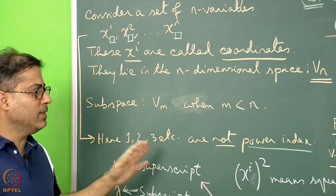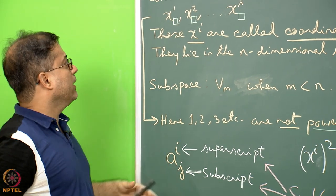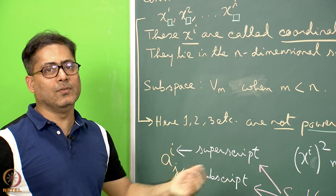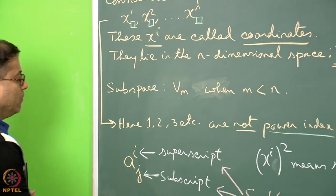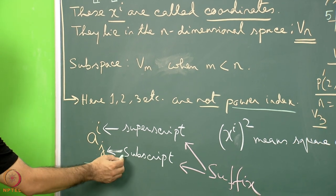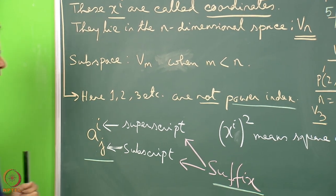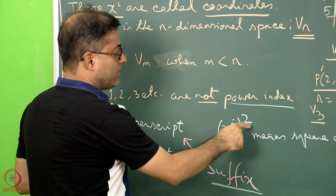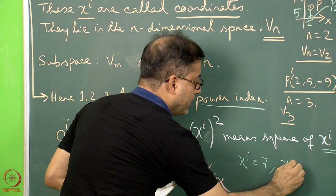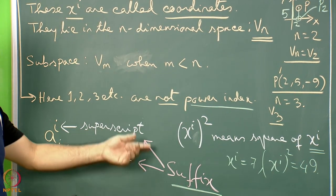One point to mention: not everything in the basics I am covering will be applied in my own lecture, but those who want to get into the detailed tensorial representation of stress and strain will require all of these basics. Now we look at a representation aᵢⱼ, where i is the superscript, j is the subscript, and i and j together are called a suffix. Also, xᵢ squared means the square of xᵢ — for example, if xᵢ equals 7, then xᵢ squared equals 49.